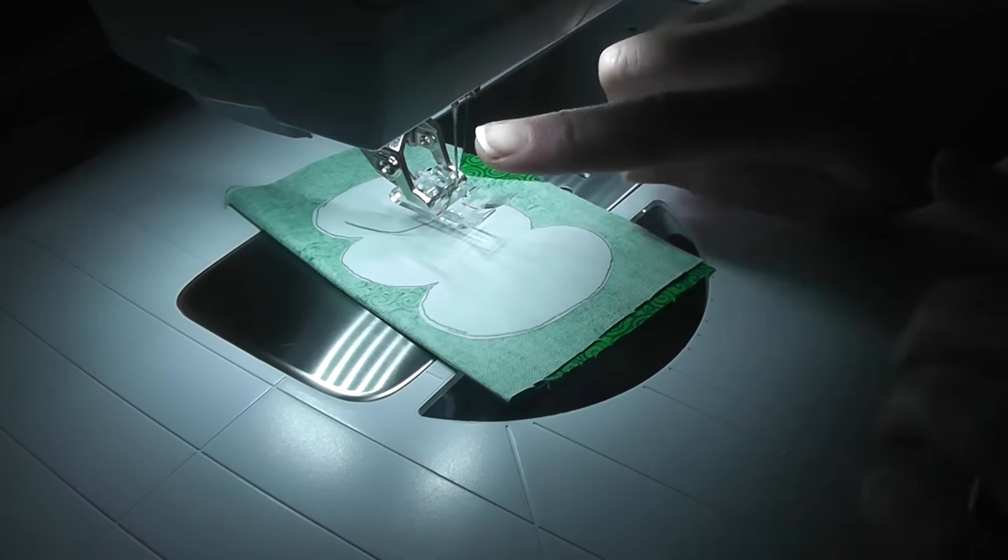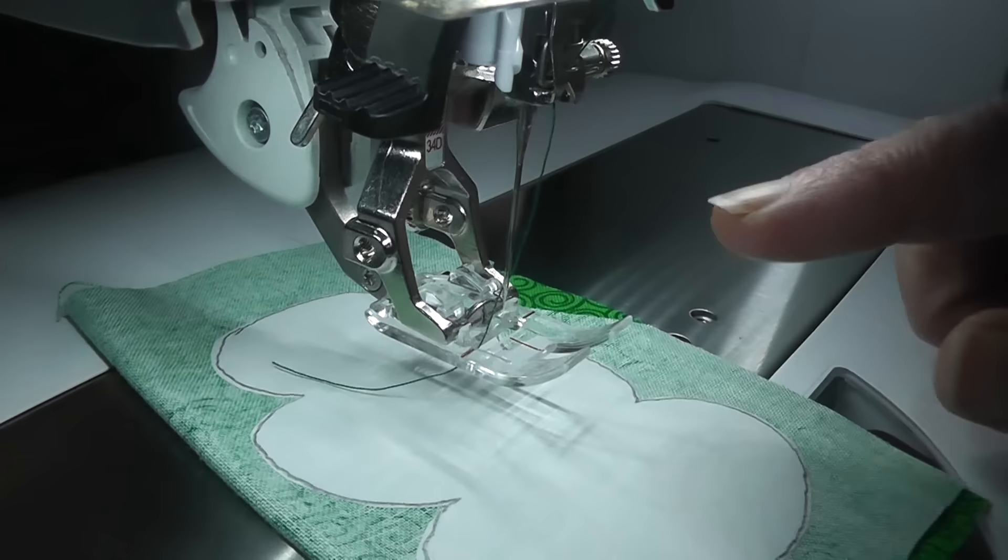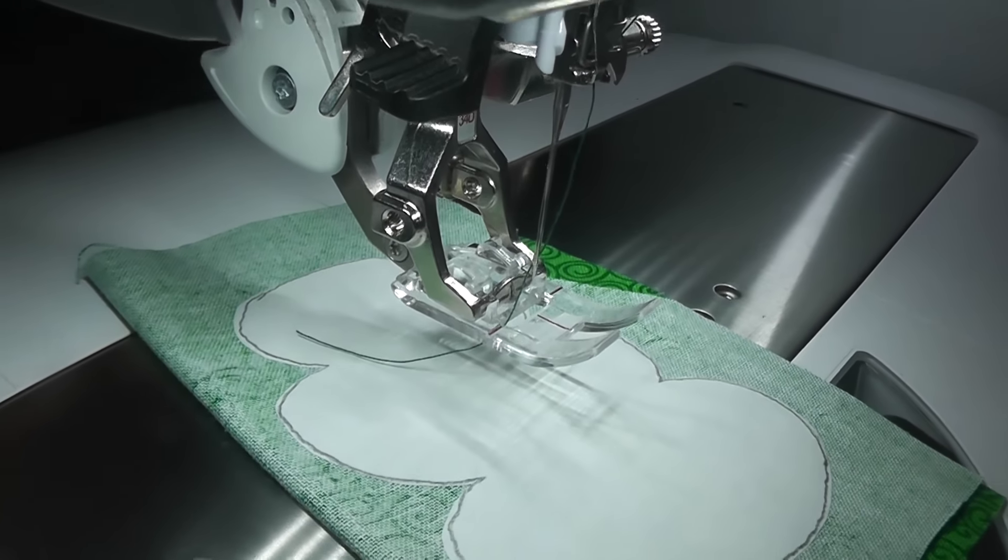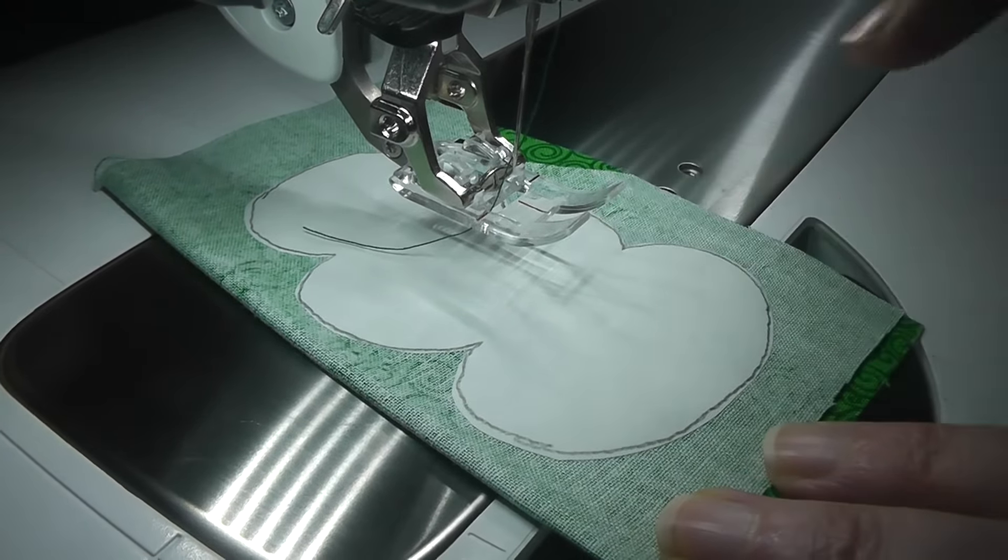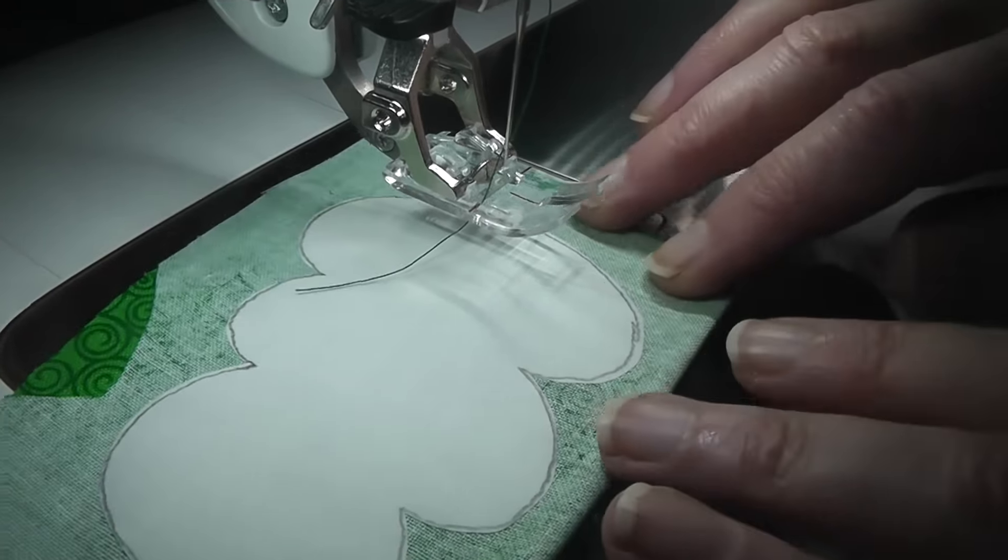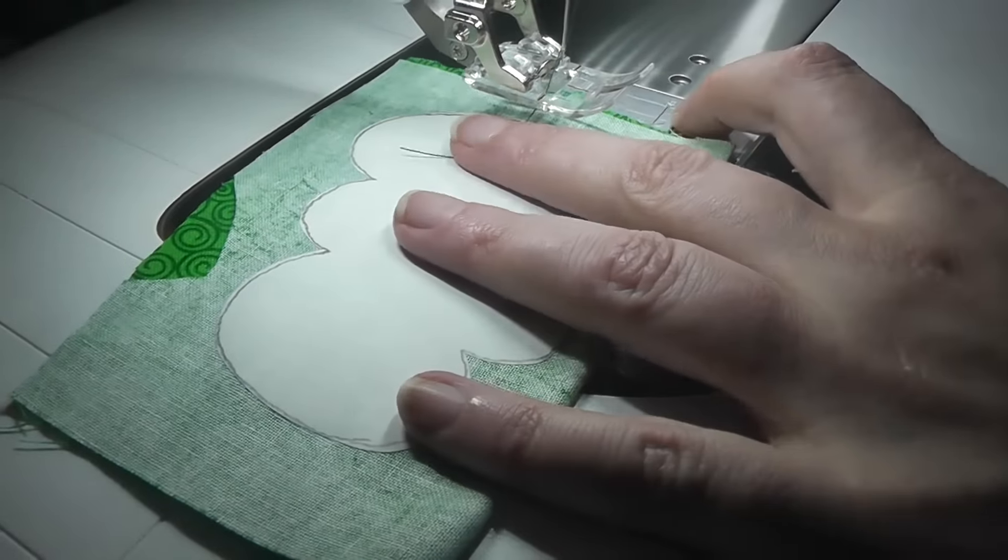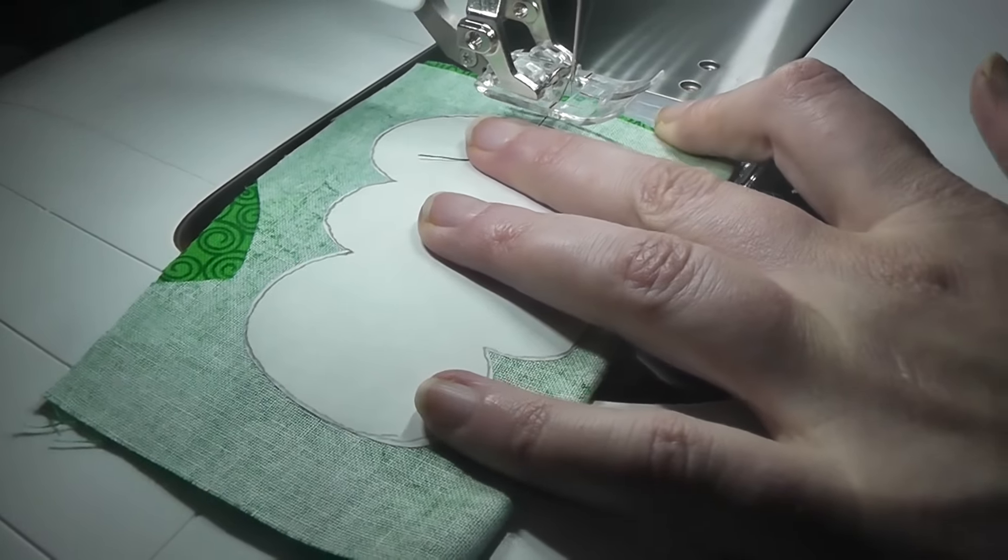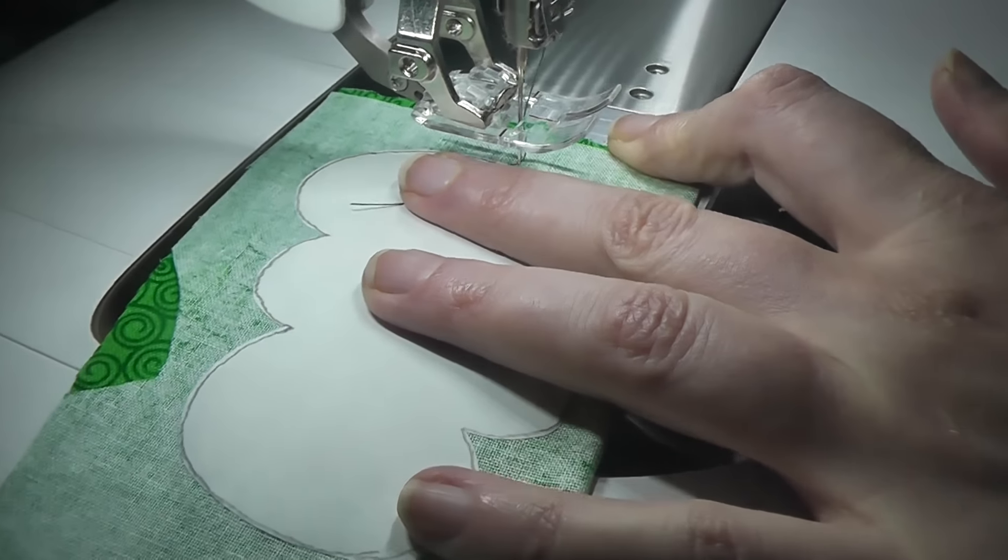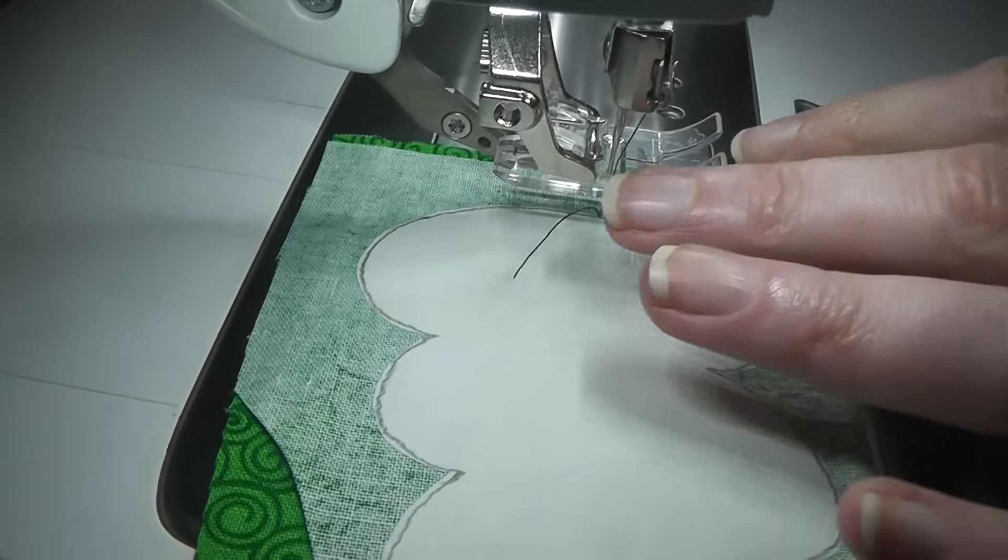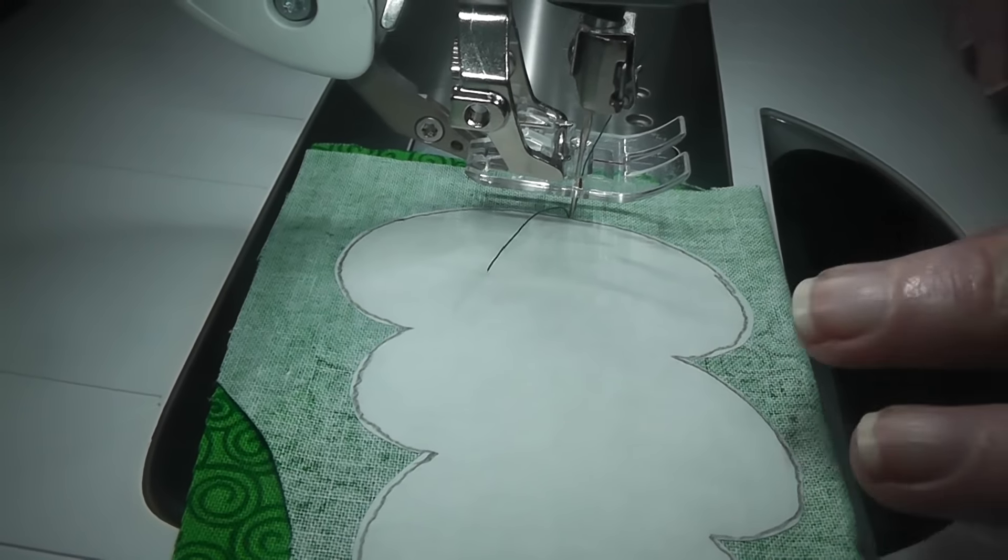So we've got our piece. I've got just regular thread in the machine, a regular needle, nothing fancy. I do have my stitch length a little bit shorter than usual, set at a 2. That's going to help me navigate these tight curves without any awkwardness. I'm going to start my sewing on this straight-ish edge.